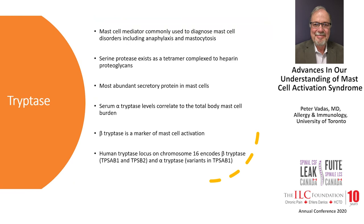Let's turn to tryptase. It's an enzyme released from mast cells when they're activated, but also released when mast cells are at rest. There are two types: beta-tryptase released with mast cell activation such as anaphylaxis, and alpha-tryptase that trickles out of mast cells all the time. Elevated alpha-tryptase levels indicate more than the usual burden of mast cells throughout the body, while beta-tryptase is a marker of mast cell activation. Alpha-tryptase correlates to total body mast cell burden; beta-tryptase is the activation marker.